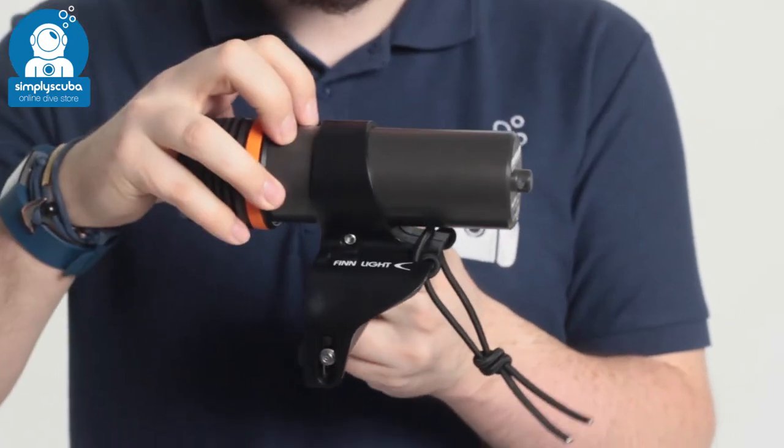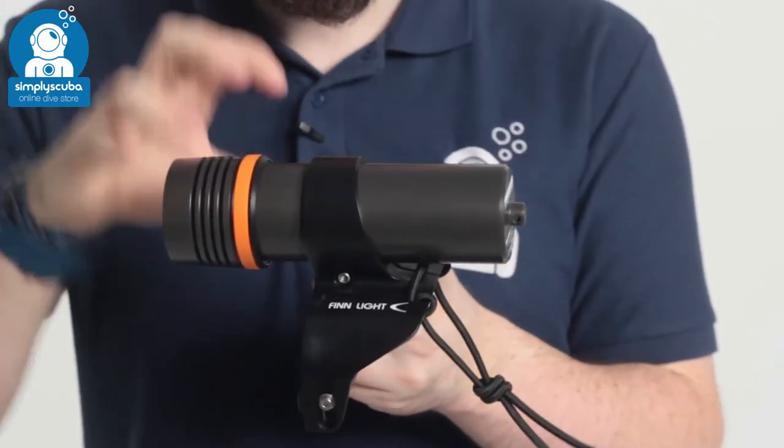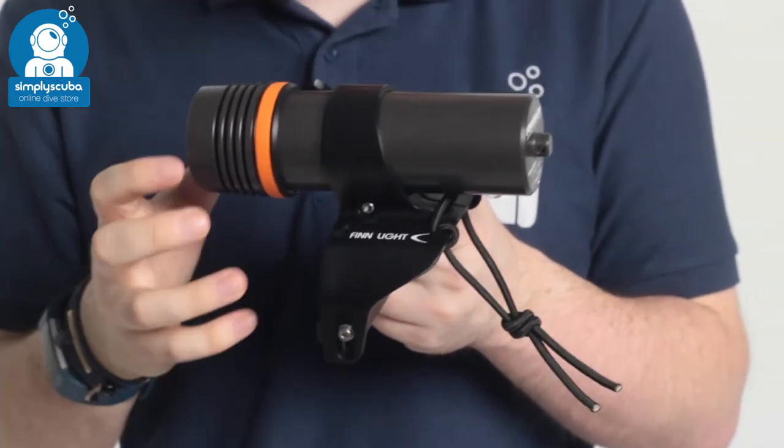Rechargeable battery on the inside. This main section of the torch is anodized aluminum, so it's lightweight but it's also very strong.